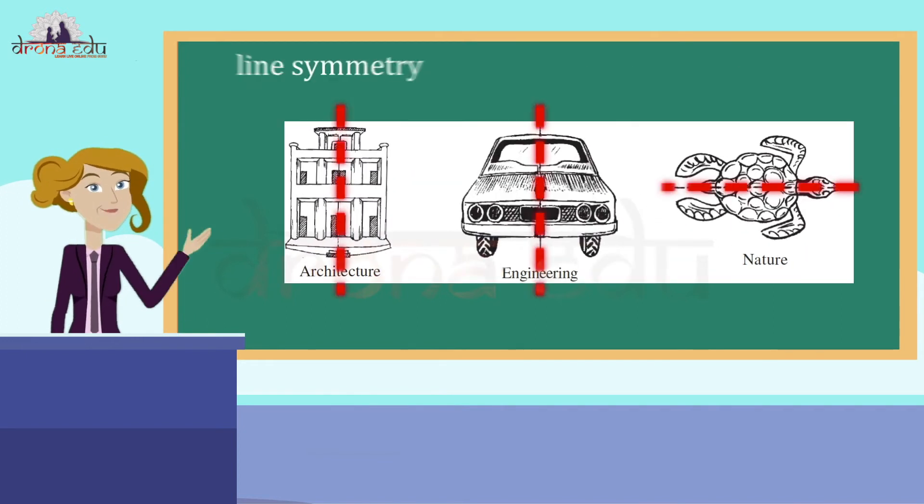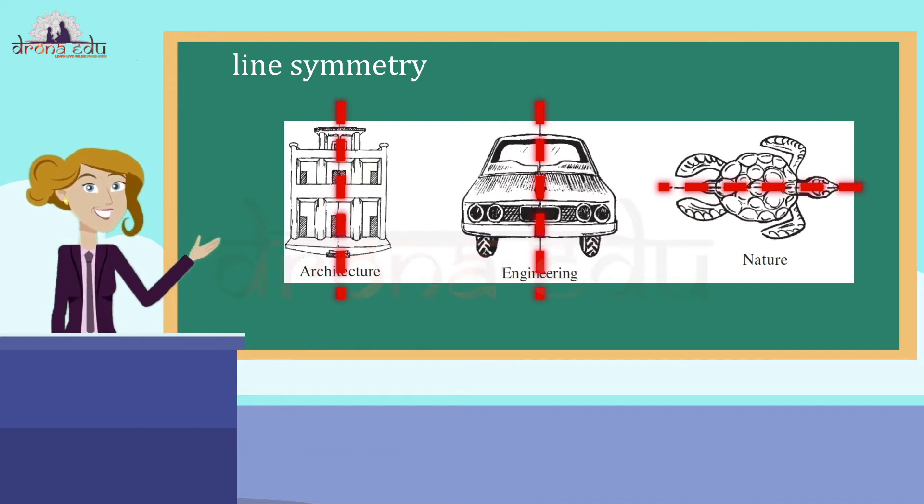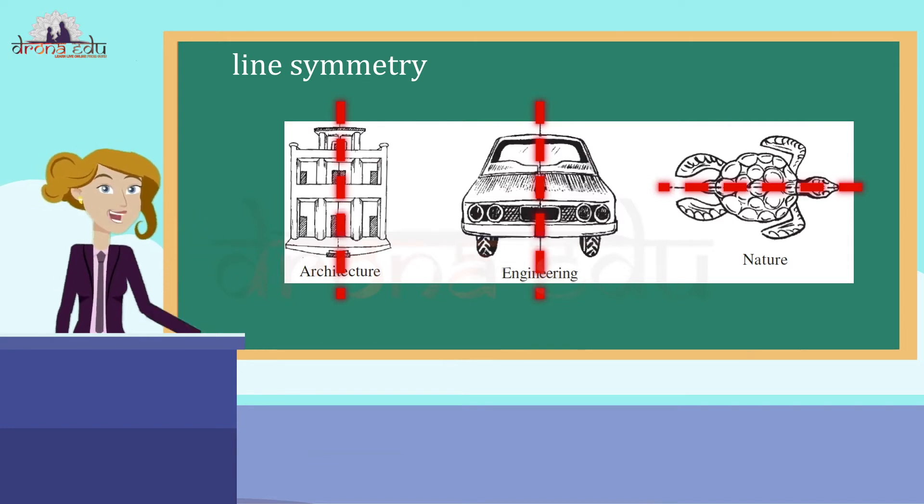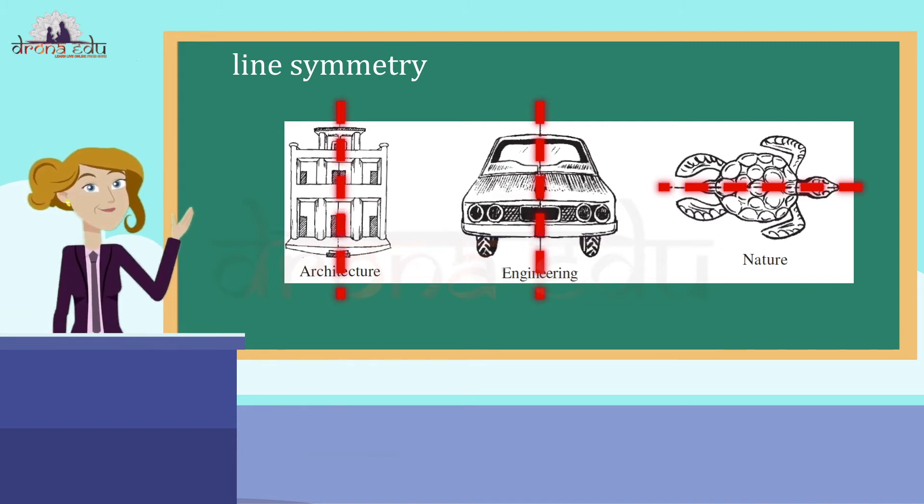You have already had a feel of line symmetry in your previous class. A figure has a line symmetry if there is a line about which the figure may be folded so that the two parts of the figure will coincide. You might like to recall these ideas. Here are some activities to help you.